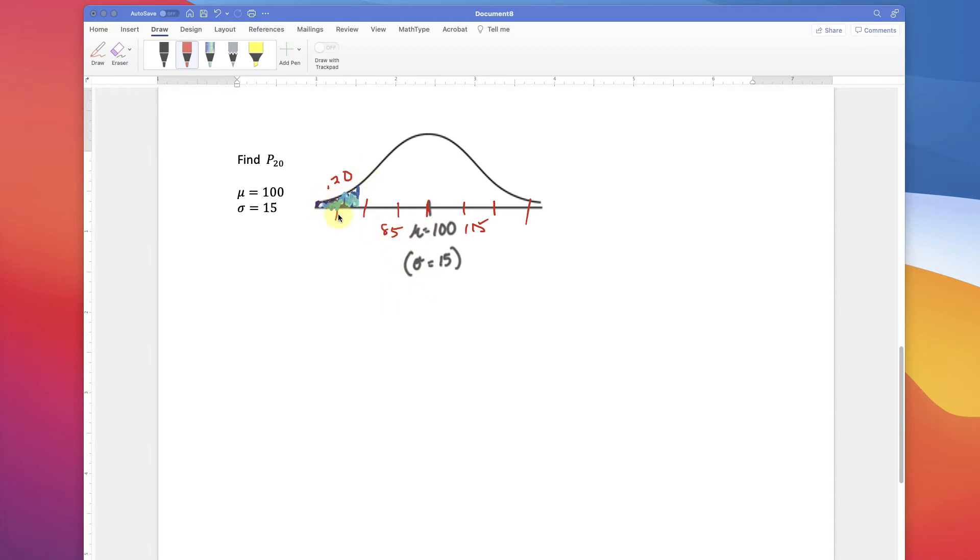You'd find a z-score, then you'd have to put in the information into the formula and solve for your x. So it's going to be quite a bit of work. You'd get your mu, your standard deviation, and your z-score, and then you would solve for x. But what we can do is just take StatCrunch.